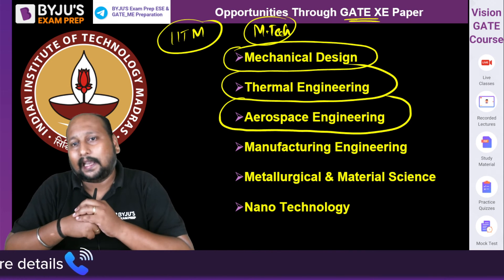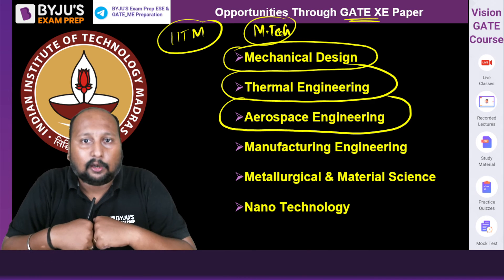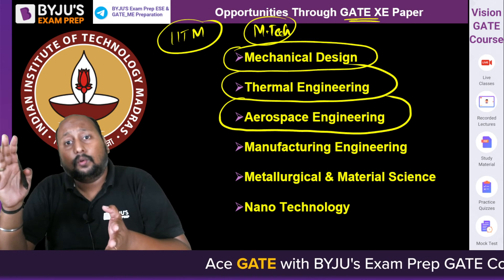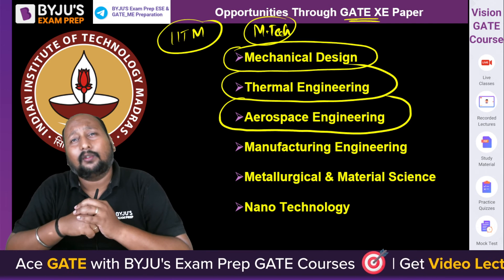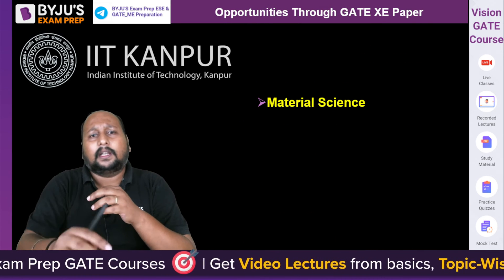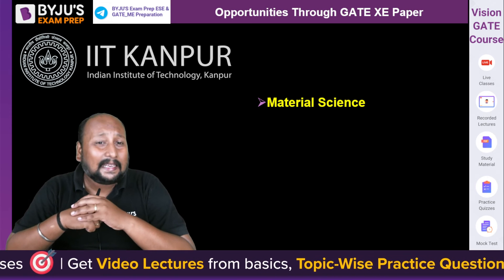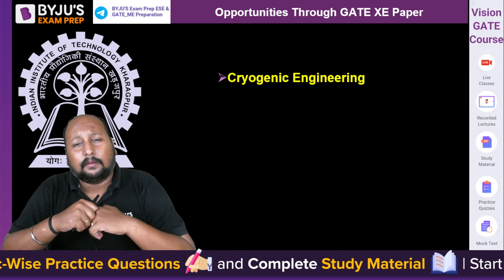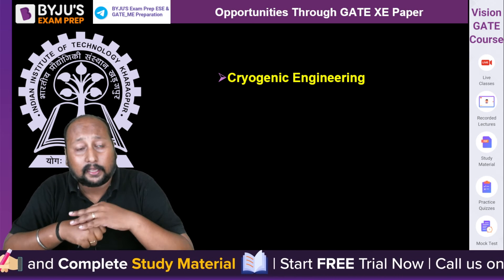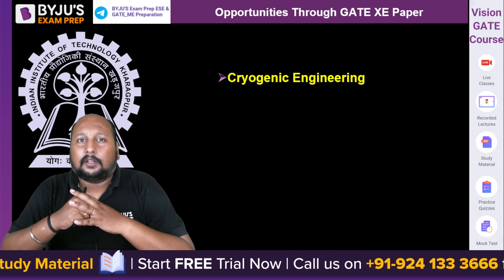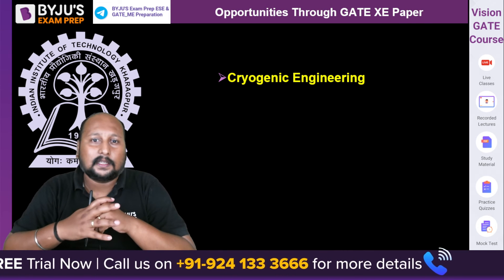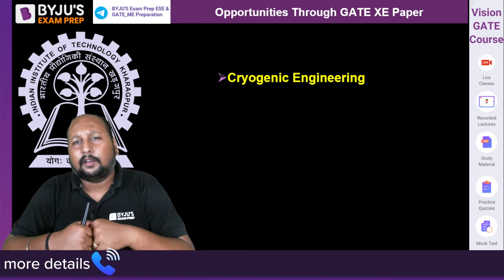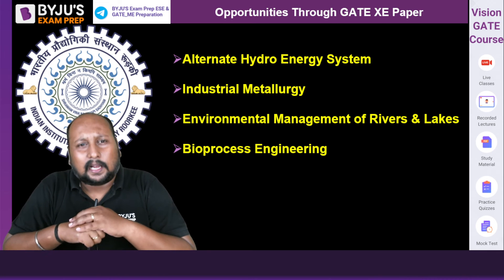The key advantage is that by getting 60 to 65 marks in GATE XC paper you can get into IIT Madras for these programs, whereas 60 to 65 marks in the mechanical GATE paper would not get you there. Through these higher studies at top IITs, you can get into top MNCs — you cannot get into PSUs through XC paper, but you can get into top IITs. IIT Kanpur is offering Material Science through GATE XC paper. IIT Kharagpur offers admission in Cryogenic Engineering, which is a top research interest for many mechanical students.